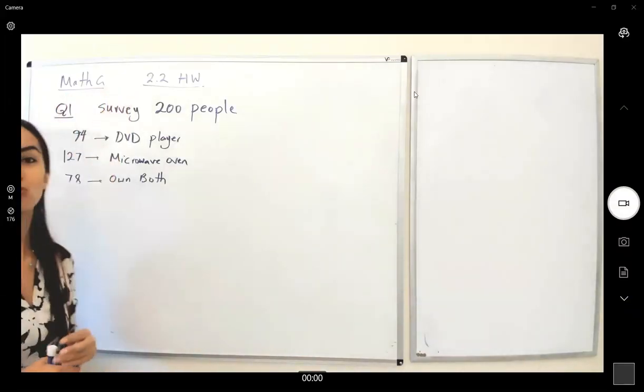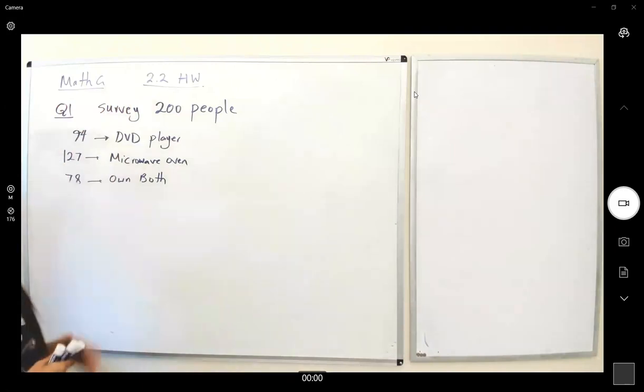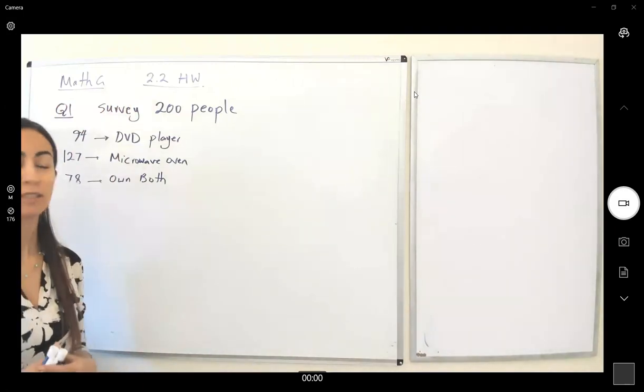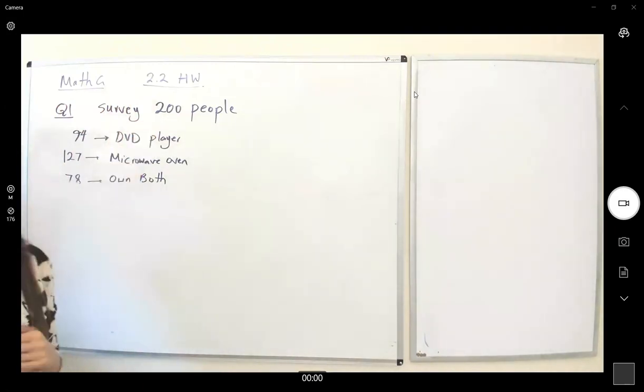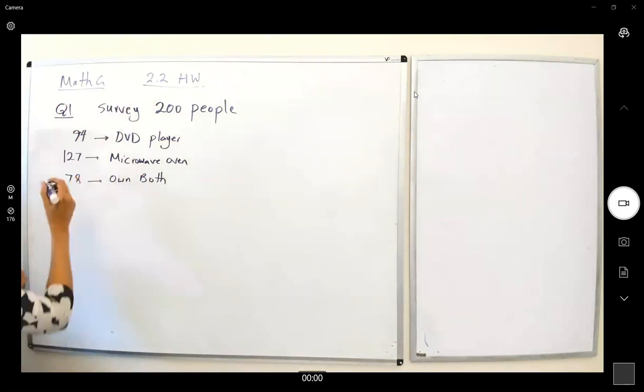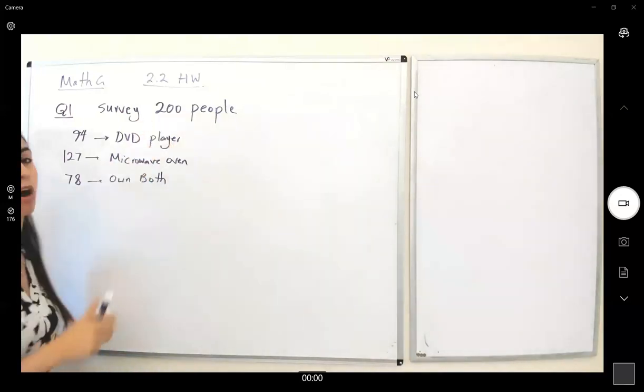My Key 2.2 homework, question one. In this question you have a survey of 200 people. The following information: 94 of them have DVD players, 127 have microwave ovens, and 78 of them have both.